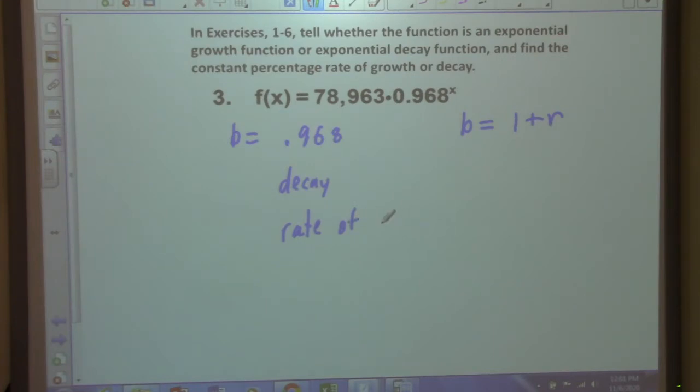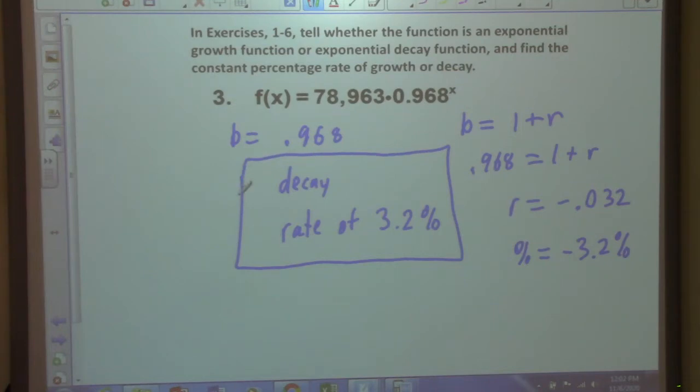You said 3.2%? Yeah. Okay, let's go ahead and make sure that's the case. So if we have our base, 0.968, equals 1 plus R, and we subtract 1, we get R is equal to negative 0.032. Is that what you got, Karina? Yeah. And then so in percentage, it's going to be negative 3.2%. But the word decay comprehends the negative sign. You see that? So therefore, we will have our answer here.